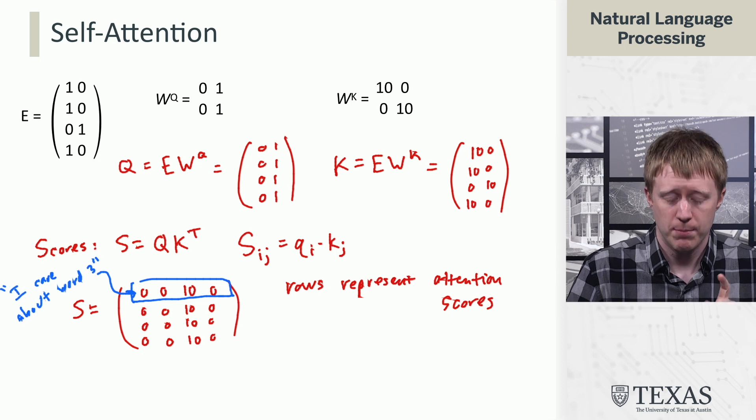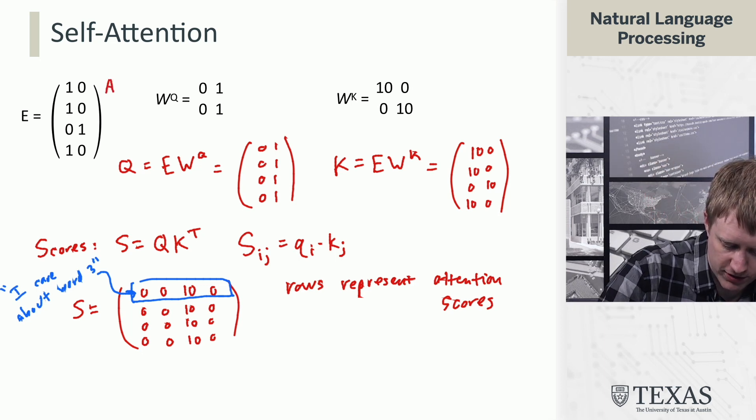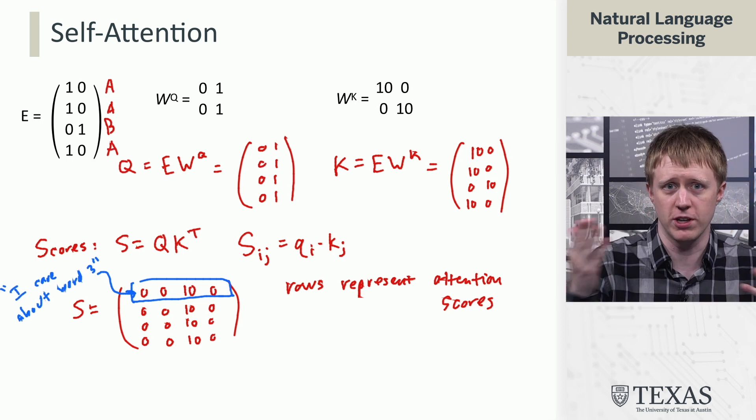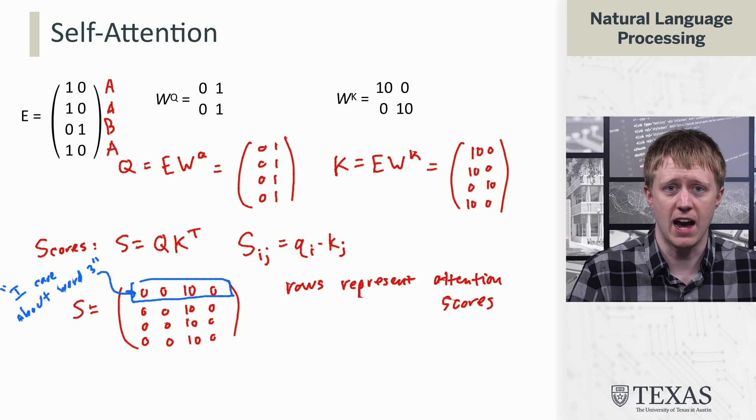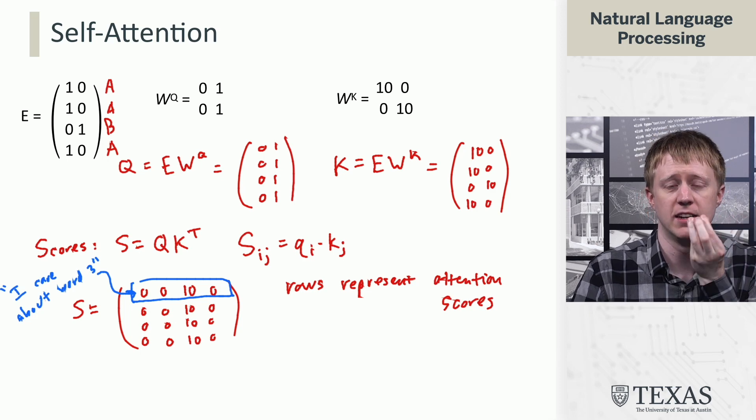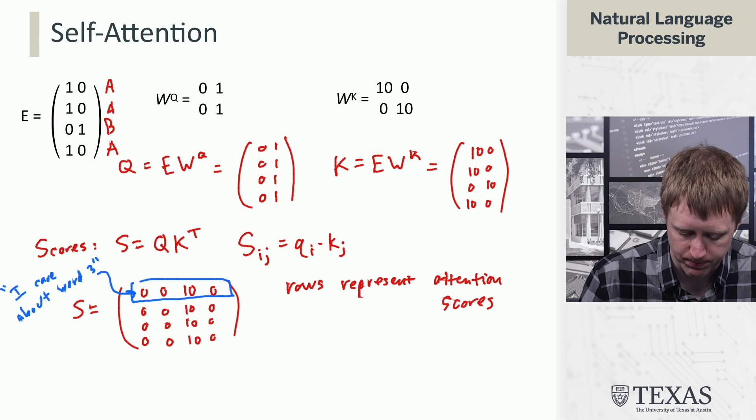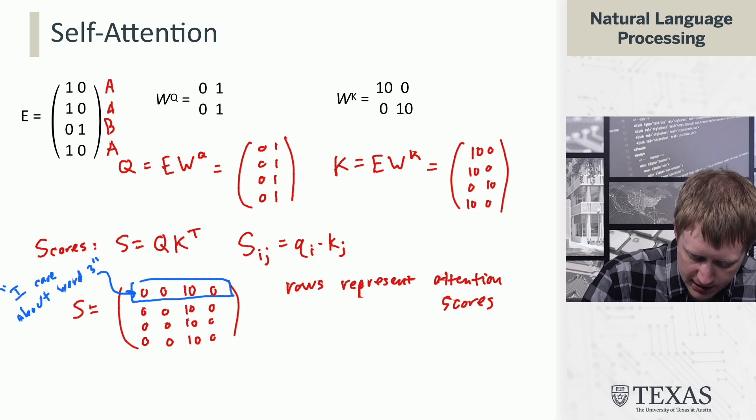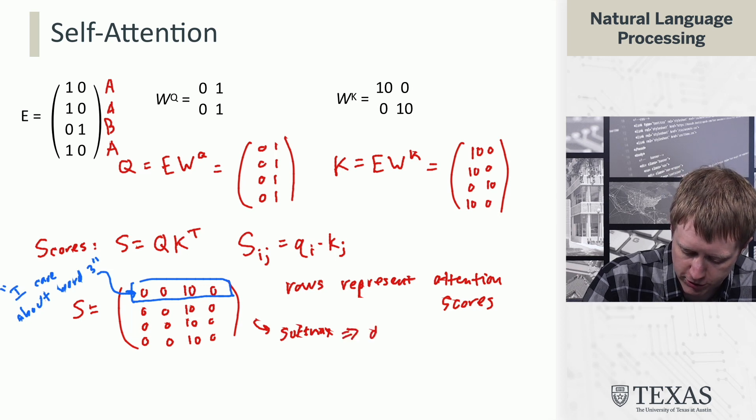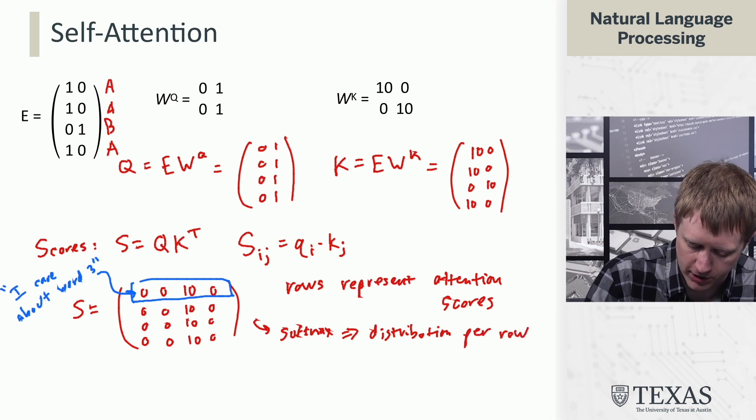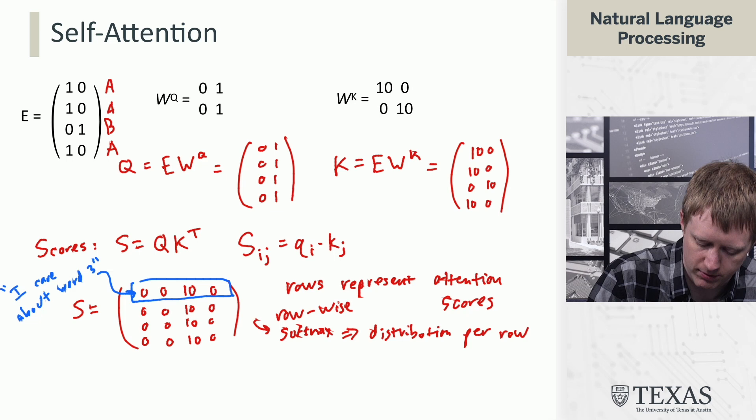This is what we wanted, right? Because our original sequence here, A, A, B, A, what we care about is finding the B. It turns out we've now successfully cooked up this self-attention computation where we have a distribution at each position that's placing high probability mass on the B token. We did it all with these linear operations and then ultimately this softmax, which is going to turn this into a distribution per row. This is a row-wise softmax in this matrix.